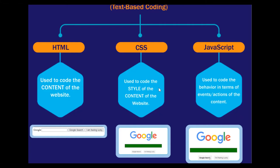So what is HTML? HTML is used to code the content of the website — whatever content you have to add in your website, you code it in the HTML part. Once I show you the CodePen website on screen you'll be able to understand everything. For now, just learn these parts: HTML is used to code the content, and CSS is used to code the style of the content of the website.